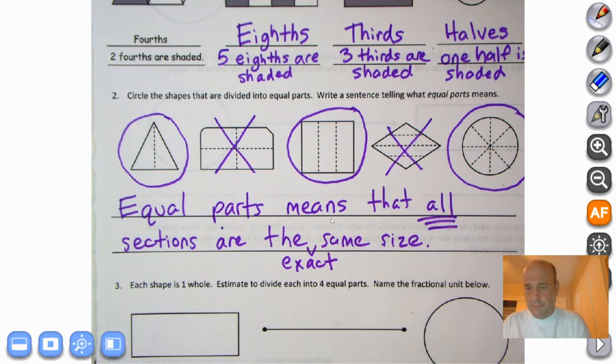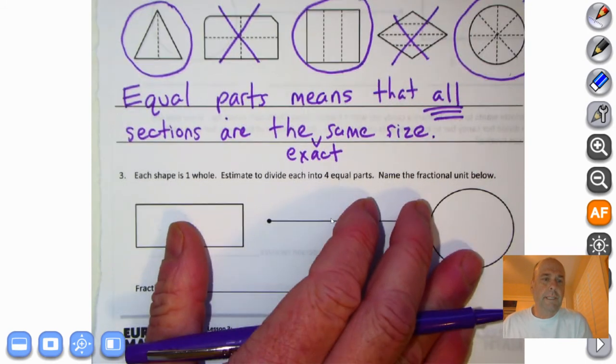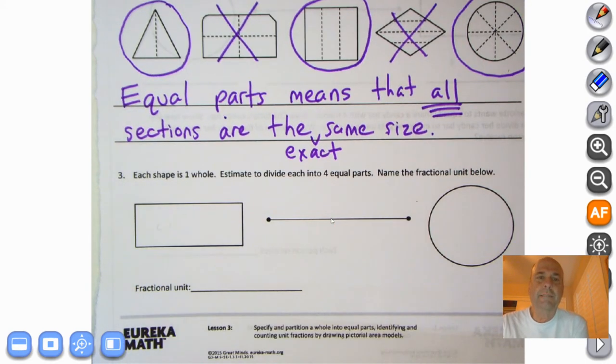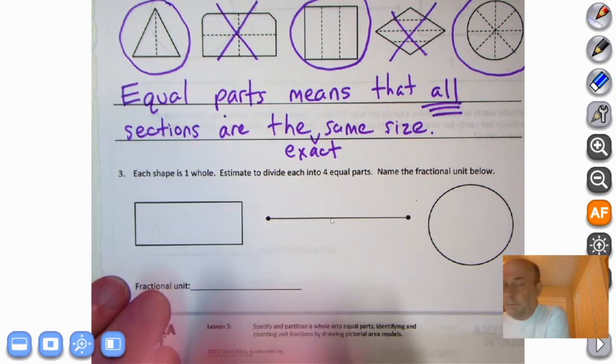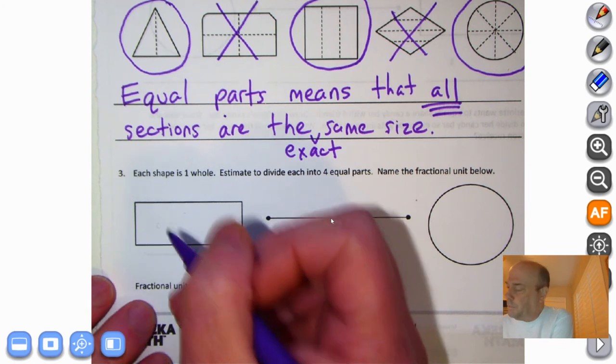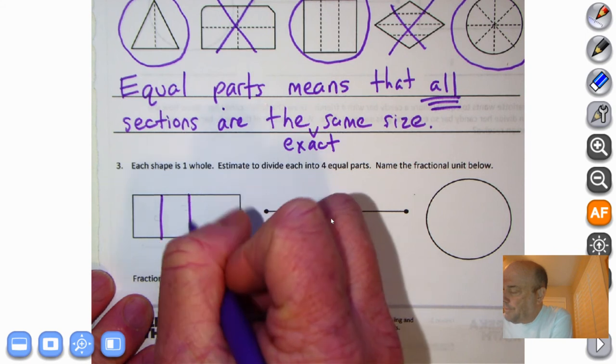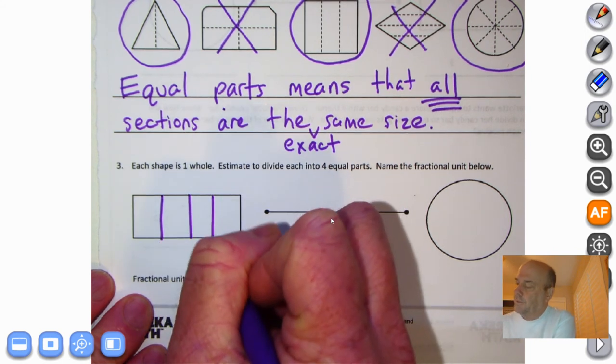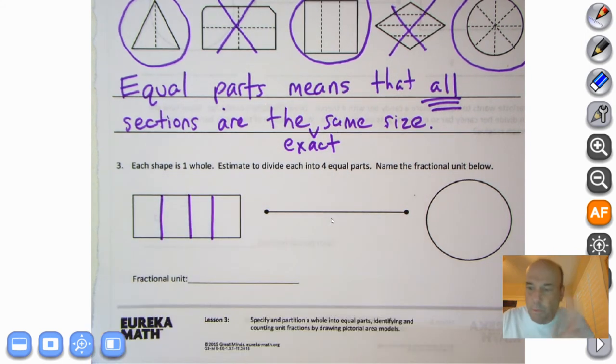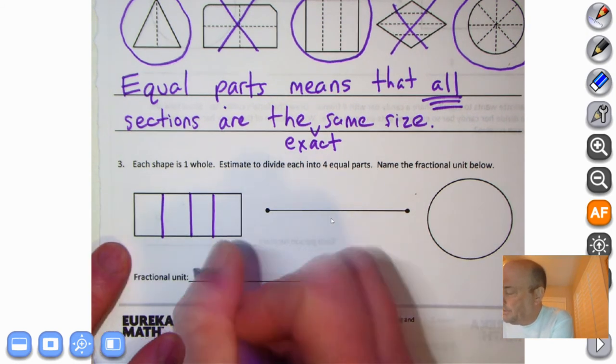And remember, you always hit pause if you need to. Let's go to number three. It says each shape is one whole. Estimate to divide each into four equal parts. Name the fractional unit below. So we're not going to get a ruler and make them totally equal, but let's put them into four equal parts. That means we're going to be cutting three times on this rectangle. One, two, and three. So we have four equal parts. So we're going to call this fourths.